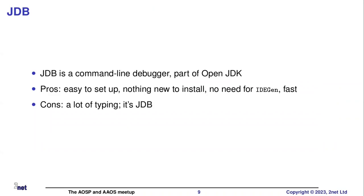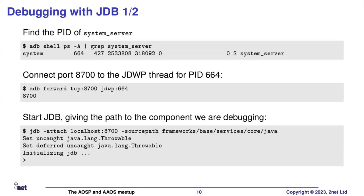Another way to do it — and you might think this is weird, but I think it's quite cool — is to do the whole thing from the command line. Why would you want to do this? Mostly because it just works out of the box. I don't need to install anything. JDB is part of the JDK, and the JDK is part of AOSP. So you can just type JDB and it will just work. It's a quick way of doing things — a quick and difficult way, anyhow.